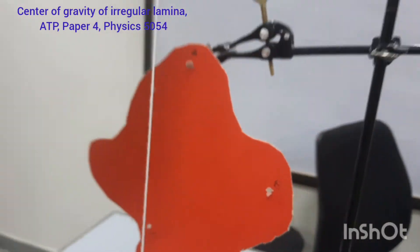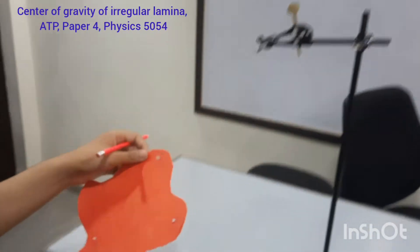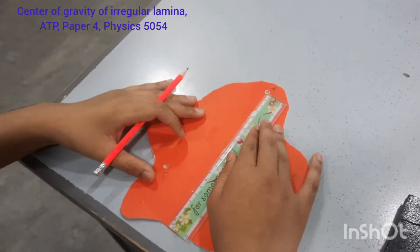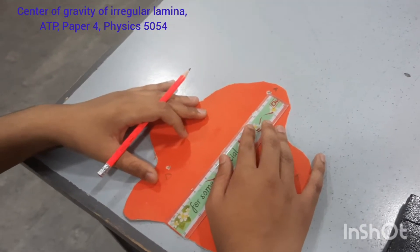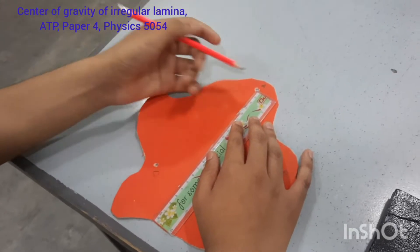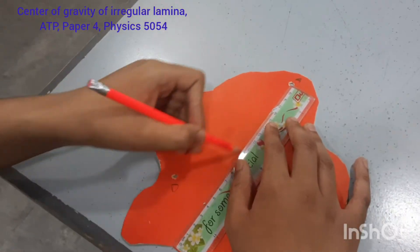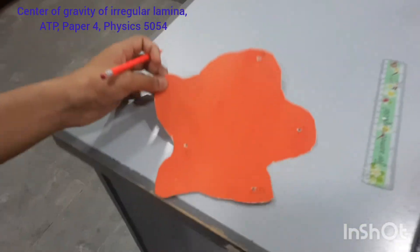So now what we will do, we will remove it, we will put it on the table and we will join both the dots with each other.